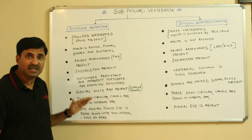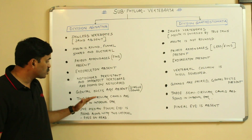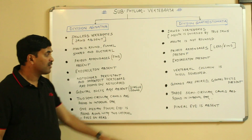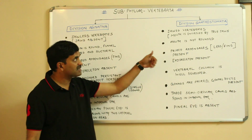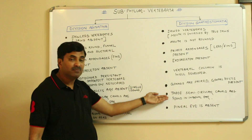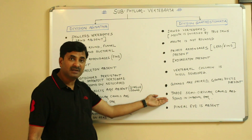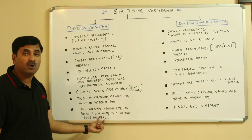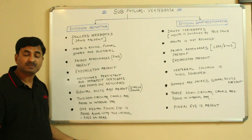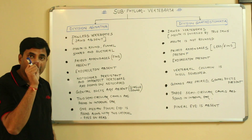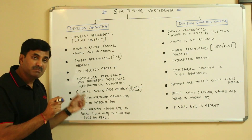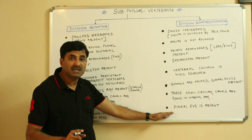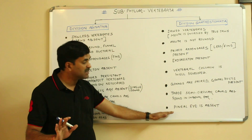If we talk about the internal ear, only two semicircular canals are found in division Agnatha, while the members of division Gnathostomata have three semicircular canals in the internal ear. Additionally, in Agnatha, one median pineal eye is present along with the two lateral eyes on the head. But in Gnathostomata, the pineal eye is totally absent.